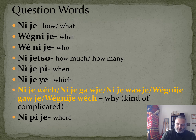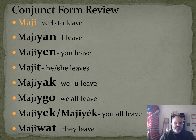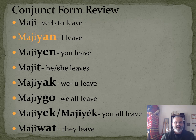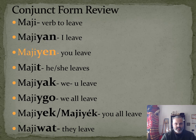Ni pija means 'where.' For a little review on the conjunct: maji is the verb 'to leave.' Maji yan means 'I leave.' With these conjunct ones, all the information about who's doing it is on the back end.